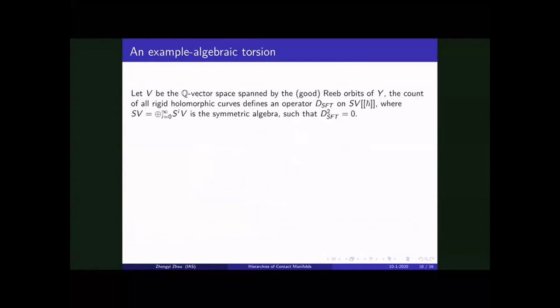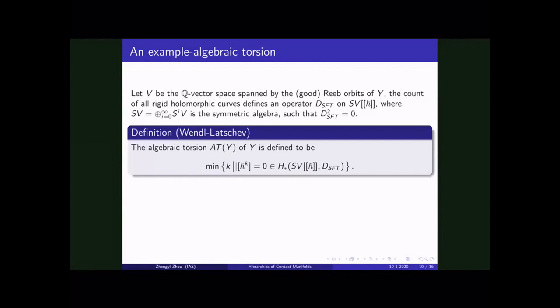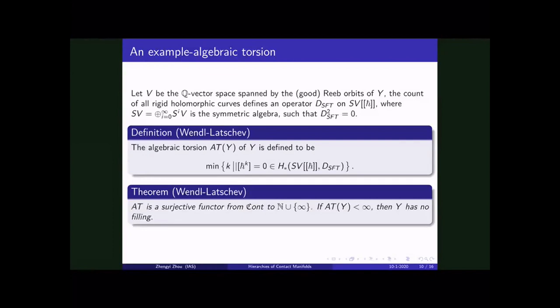So here is an example of actually carrying out this construction. So let V be the space spanned by the Reeb orbits of Y. And we count all holomorphic curves to define, the count of all rigid holomorphic curves will define operator D_SFT on a huge space SV[[ℏ]], which is a symmetric algebra of V. And then you add an operator element ℏ. And the relation, quadratic relation we get is D_SFT squared is zero. And the definition due to Wendl and Latschev is the algebraic torsion of a contact manifold is defined to be the minimum number K such that ℏ^K is zero in the homology. ℏ is always a closed class. This is asking whether it's an exact class. And this actually is a functor from the cobordism category to natural numbers union with infinity. And in particular, this is a surjective functor.